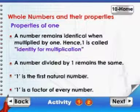Properties of 1. A number remains identical when multiplied by 1. Hence, 1 is called identity for multiplication. A number divided by 1 remains the same. 1 is the first natural number. 1 is a factor of every number.